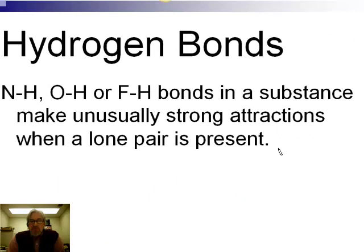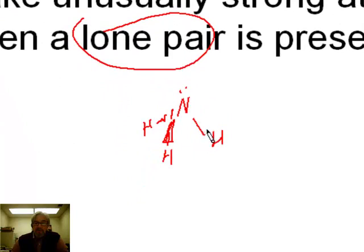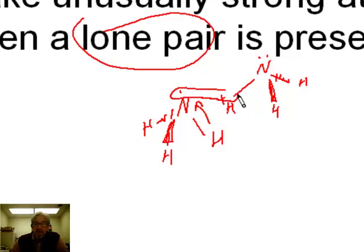There are some unusually strong dipole-dipole interactions that can occur when two conditions are met. The first thing is, you have to have a very polar bond, and typically this means NH, OH, or FH bonds in a substance. And then the other thing you need is a lone pair present on the molecule, on the negative end. So an example of this would be ammonia. Ammonia, recall, is a trigonal pyramidal shape like this, and it's got a lone pair up here. This NH bond is pretty polar. So here's a neighboring ammonia up here. The negative end is the nitrogen end. The positive end is the hydrogen end. And so there's a strong attraction between the lone pair and the negative end and the positive H end.